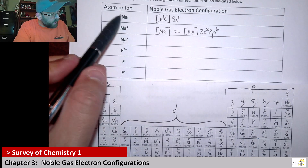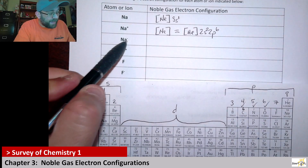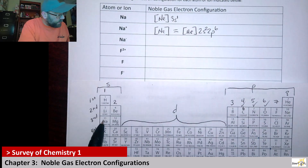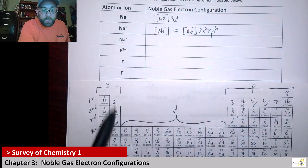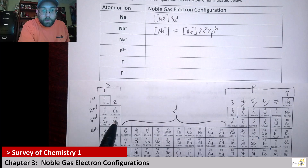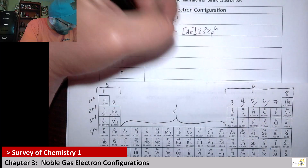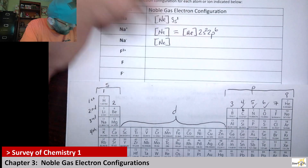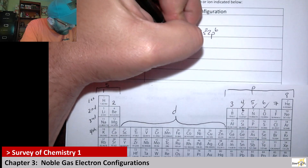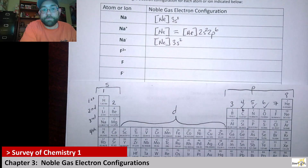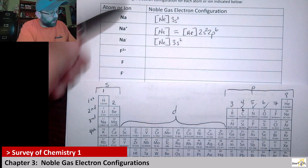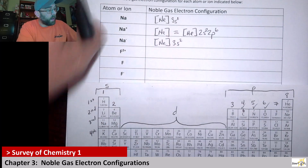With sodium minus, you started at sodium but it gained an additional electron. When you add an electron, you move to the second column of the S block. So its noble gas configuration would be neon 3S2, because it gained an electron from the original sodium.